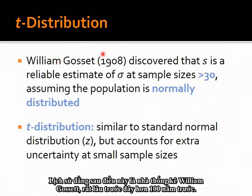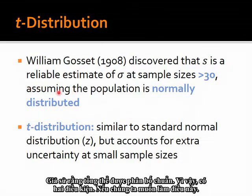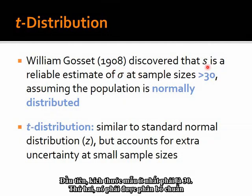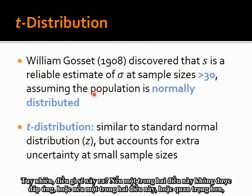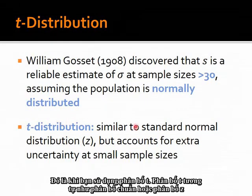The history behind this is that William Gossett, a statistician more than 100 years ago, discovered that s is a reliable estimate of sigma at sample sizes of 30 or greater, assuming the population is normally distributed. So there are two conditions if we want to assume s is more or less equal to sigma: sample size must be at least 30, and the data must be normally distributed. However, if either of these are not met — or more importantly, if you are not absolutely sure it's normally distributed, or the sample size isn't big enough — that's when you use the T-distribution.